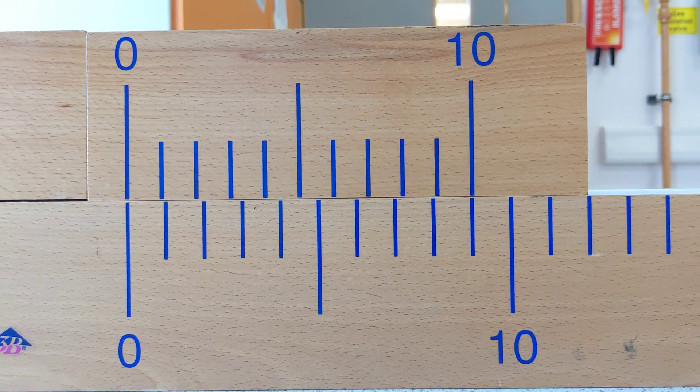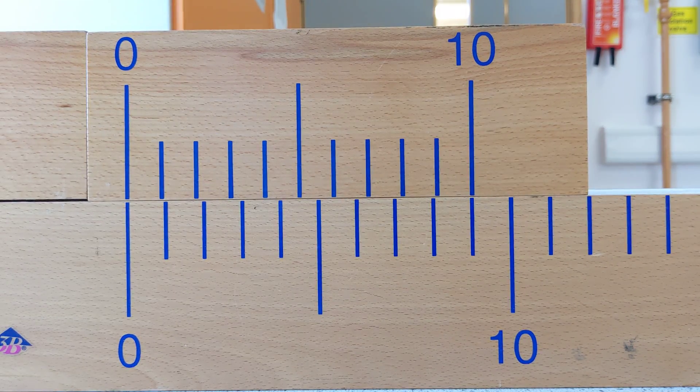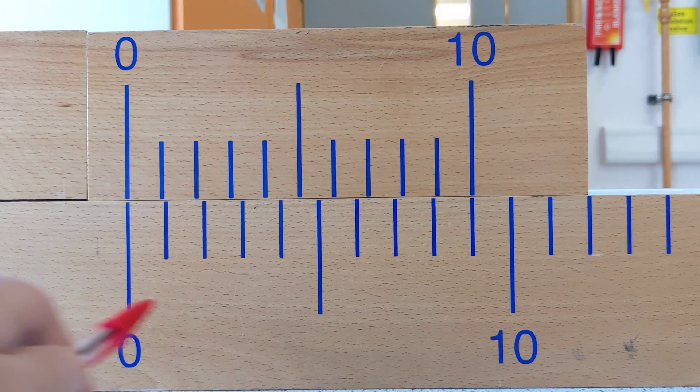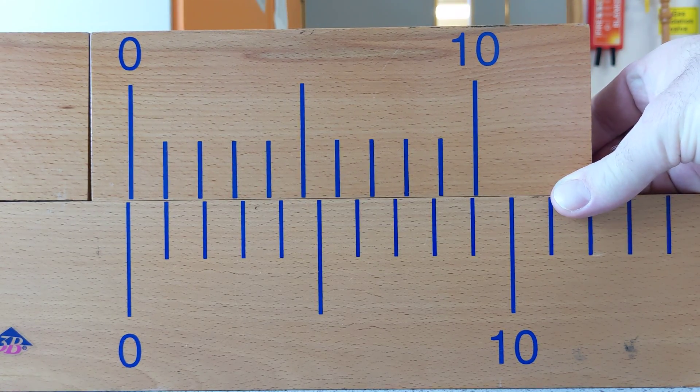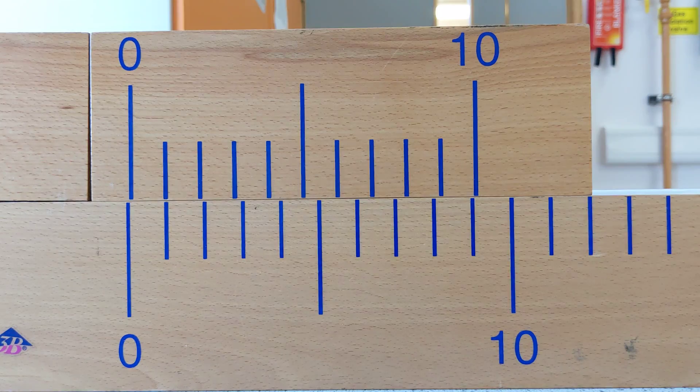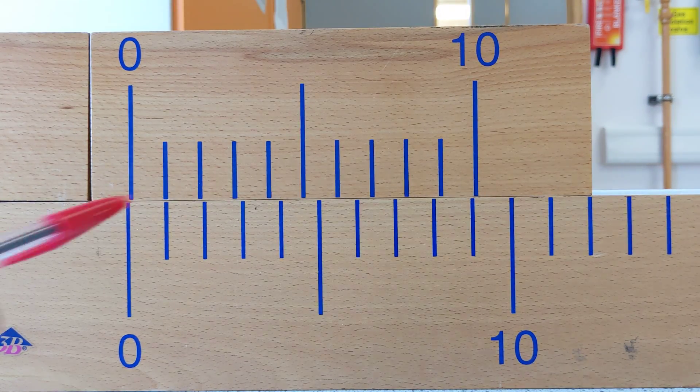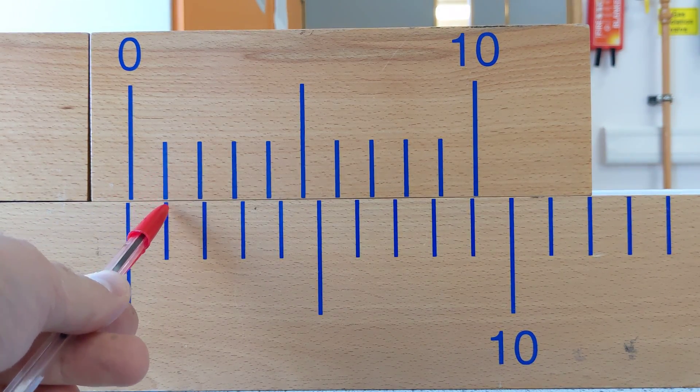If I were to move the vernier scale one tenth of a unit along the main scale, that gap is now one tenth of a unit. And these two lines line up.